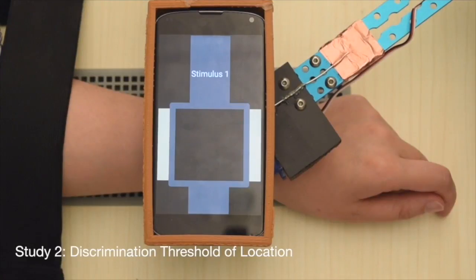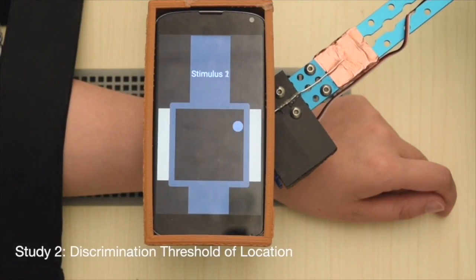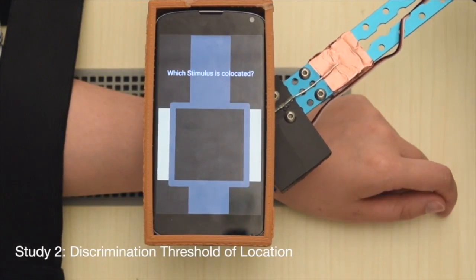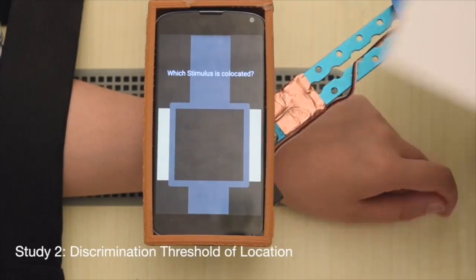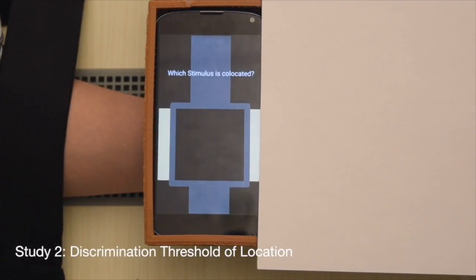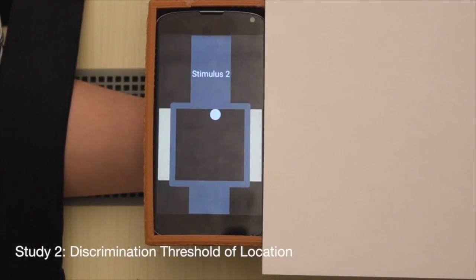In study two, we explore the discrimination threshold of the distance between the taxel and the visual object. The view of participants is blocked using a piece of paper to avoid motion of the robotic arm from influencing user responses.